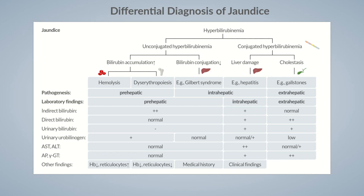Alkaline phosphatase is an isoenzyme formed by many tissues and also by some tumors; it's found especially in bile ducts. In cholestasis, there's increased alkaline phosphatase synthesis, making it a classic indicator of biliary obstruction. Gamma-glutamyl transferase levels are elevated in liver or biliary diseases, with the highest levels occurring in cholestasis. However, this enzyme is also sensitive to alcohol or drug-induced liver damage. The presence of very dark urine and pale stools also indicates an extrahepatic cause.